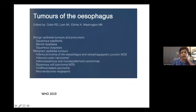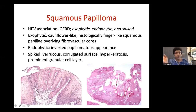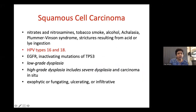Neoplastic conditions of the esophagus include squamous papillomas, squamous cell carcinoma, adenocarcinoma, and neuroendocrine tumors. Squamous papilloma is a benign proliferative lesion associated with HPV types 6 and 11 — very different from HPV types 16 and 18 which cause carcinoma. It can be exophytic (cauliflower-like) or endophytic.